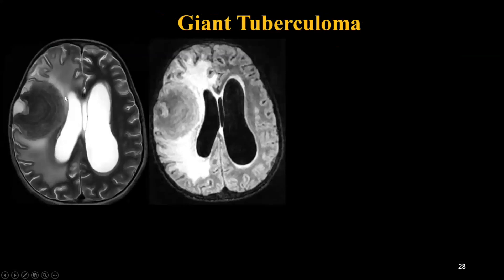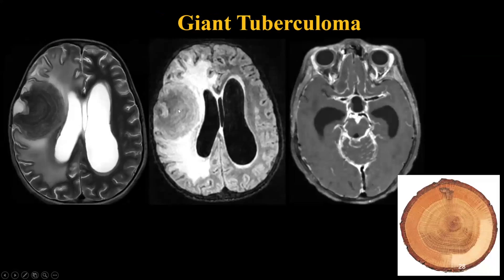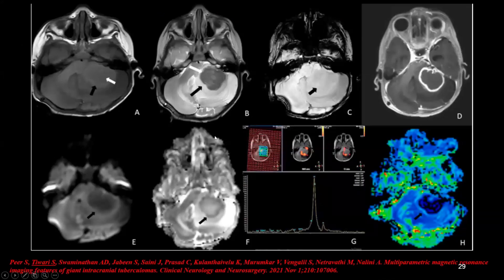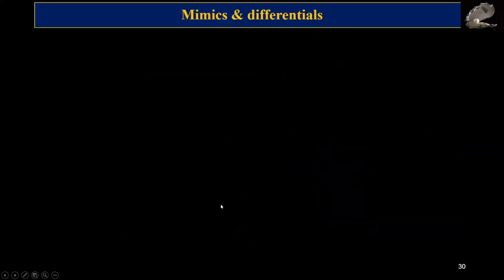Sometimes you can find giant tuberculomas which can be confused with tumors. Like in this case, there is a very well-defined lesion with a tree-bark or onion-peel-like appearance in the right frontal lobe with extensive perilesional edema causing mass effect. On contrast study, they show peripheral enhancement with this tree-bark-like appearance and associated meningitis. On perfusion study, they will not show raised perfusion because it is an infection; there will be a large lipid peak on spectroscopy and diffusion restriction will be absent or present only at the margins.